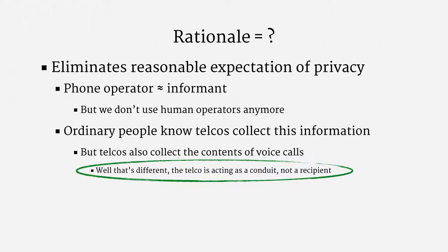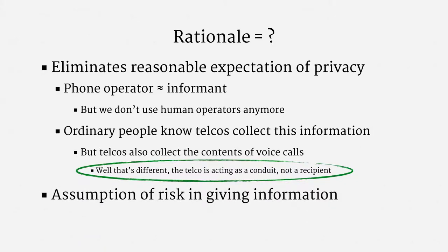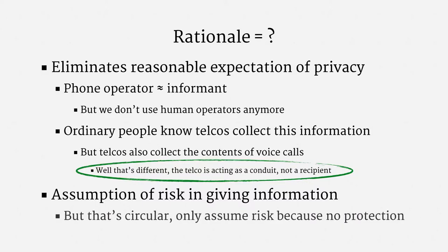Why does a privacy expectation cease to be reasonable just because some information sits in a corporate database? And why is a company acting as a conduit so different from a company acting as a recipient? A second high-level legal argument for the Third Party Doctrine has been assumption of the risk — the idea that when a person shares information with a phone company, they run the risk of the phone company giving out that information. But that's just a circular argument, since assumption of the risk is really more of a consequence of the doctrine.